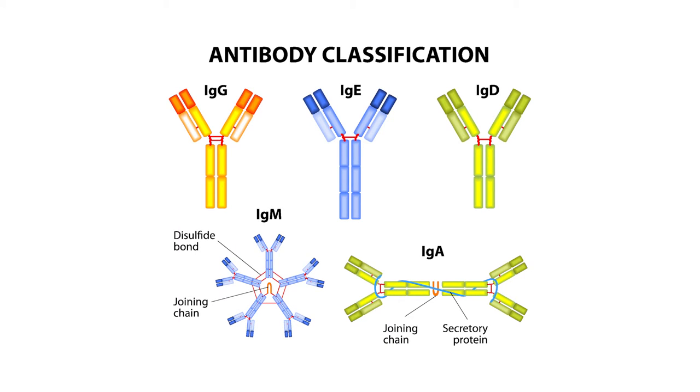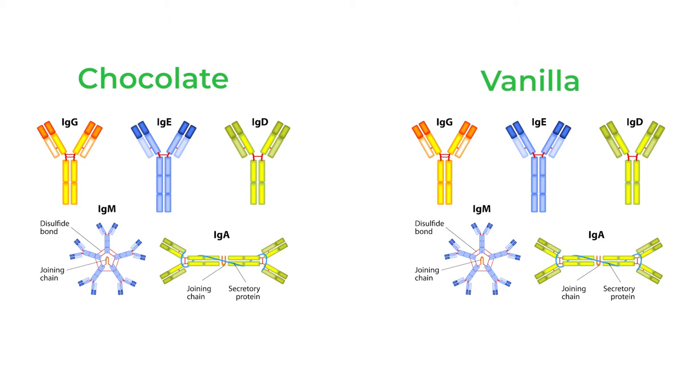On a bone marrow biopsy, what you're really looking for is how the cells actually look, and there you can't really detect the monoclonal protein or the M spike. What you do detect is the type of antibody. These antibodies can come in several flavors — and the flavors each have like a chocolate and a vanilla. What I mean by that is you can have an IgA antibody, an IgG antibody, IgE, IgD, IgM, and each one of those can have, as I said, chocolate and vanilla — in our case we call them kappa and lambda.